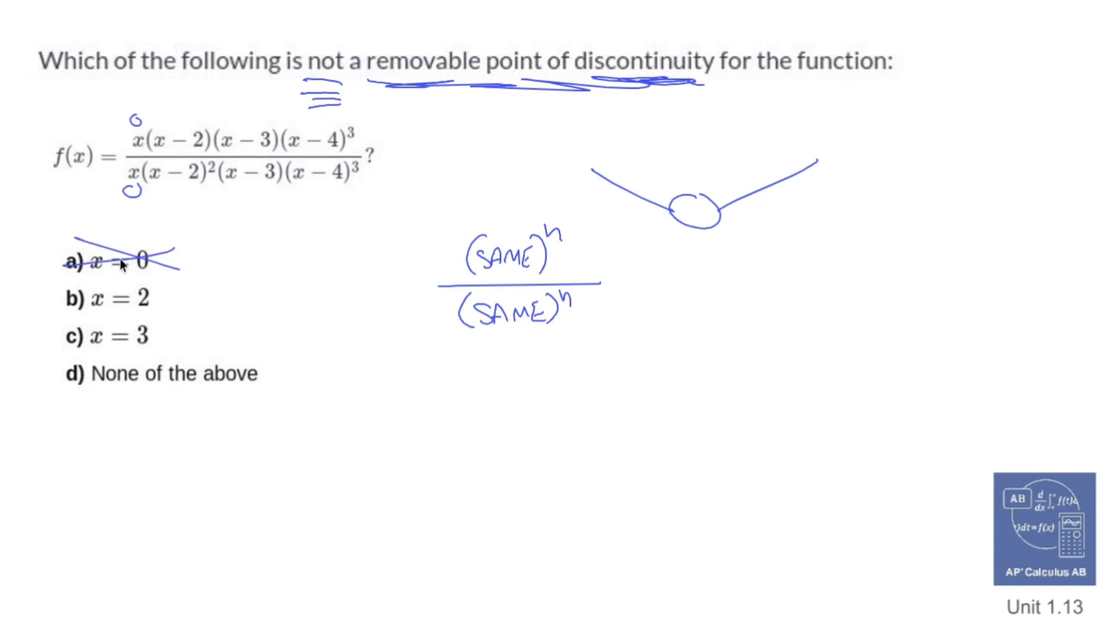I have two up here and two down here. Notice the multiplicity in the denominator is greater than the multiplicity in the numerator. That means that this guy is a vertical asymptote.